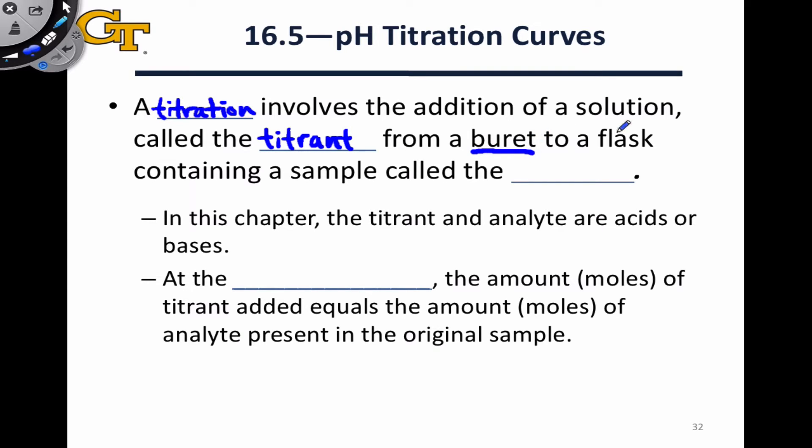And second of all, a sample called the analyte which is usually held in a flask, usually an Erlenmeyer flask, below the titrant, and we drip the titrant into the analyte until an end condition called the endpoint is reached.